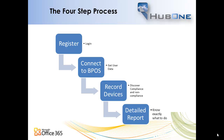The process has four steps. First, we're going to register so we can log in. Then we'll connect to BPOS to gather all the email addresses of all the users. We'll show you a couple of ways to record devices and discover whether they're compliant or not compliant with Office 365. And finally, we'll show you how to produce a detailed report so you know exactly what to do to move to Office 365.